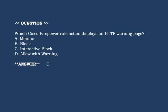Next question: Which Cisco Firepower rule action displays an HTTP warning page? Option A. Option B: Block. Option C: Interactive block. Option D: Allow with warning. Correct answer is Option C.